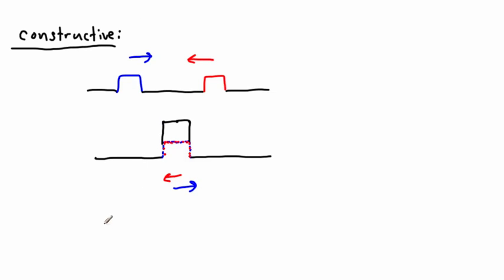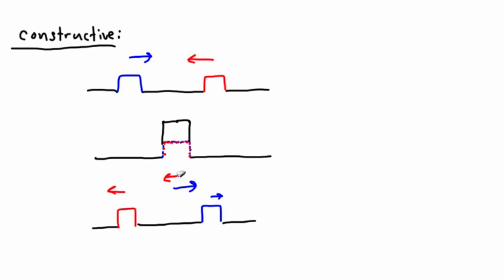Afterwards, we have the red one still traveling to the left and the blue one still traveling to the right. So this is sort of before, during, and after. The blue one basically just runs right through, and the red one goes right through. But right when they meet, it's interesting. This is an example of constructive interference.